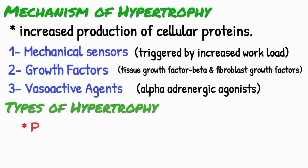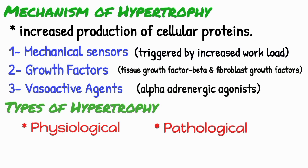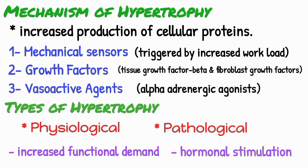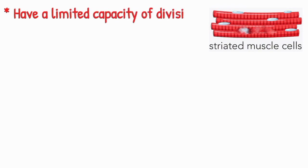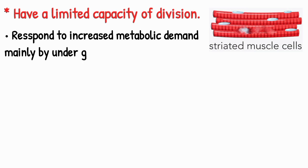Hypertrophy may be physiological or pathological. In both cases, it is caused by increased functional demand or by hormonal stimulation. The striated muscle cells in heart and skeletal muscles have only a limited capacity of division and respond to increased metabolic demand mainly by undergoing hypertrophy. The most common stimulus for hypertrophy of muscle is increased workload.